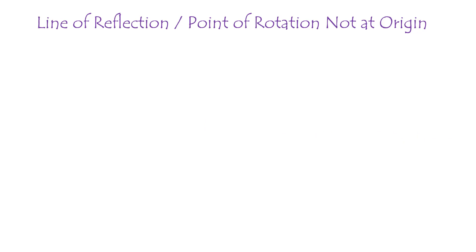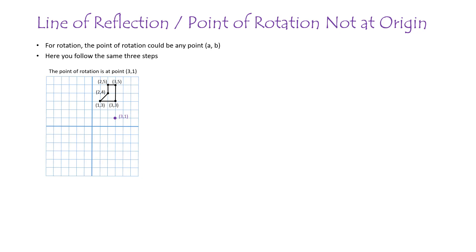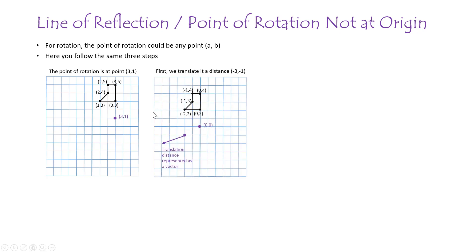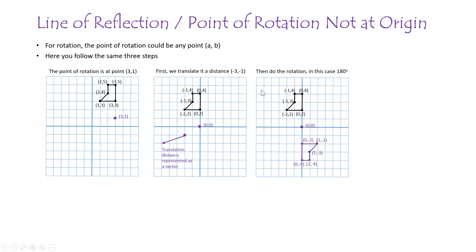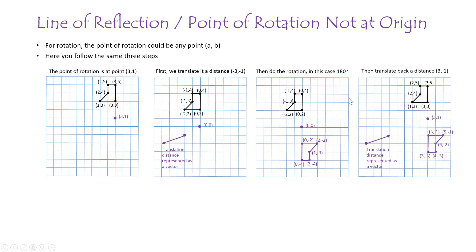The final case is the point of rotation not at the origin. The point of rotation could be anywhere, and you follow the same three steps. Take your pre-image, translate everything so the point of rotation is on the origin, do the rotation — for example, 180 degrees — and then translate everything back. That works.